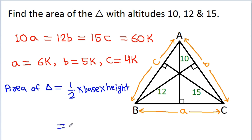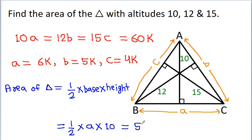We can take any base from A, B, or C. I am taking A as the base, so the corresponding height is 10. It will be half times A times 10, which is 5A, and A is equal to 6k, so it is 5 times 6k, which gives 30k.